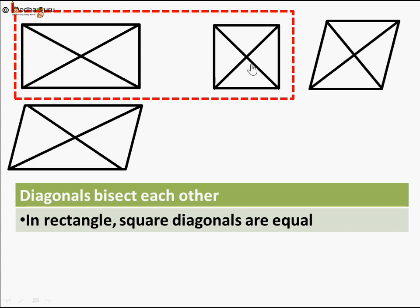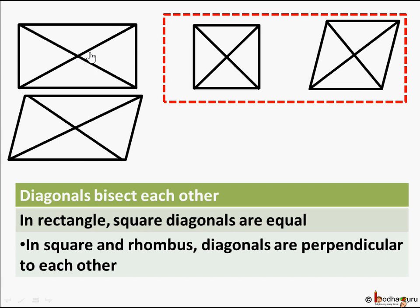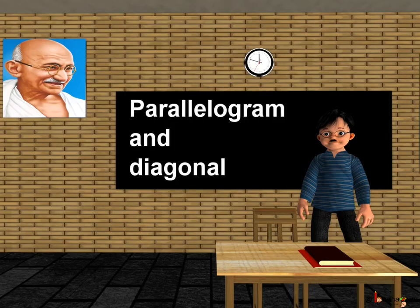In the case of square and rhombus, the diagonals are also perpendicular to each other — each angle at the intersection is 90 degrees. So remember: rectangle, square, and rhombus are all forms of parallelogram with additional properties. In square and rhombus, diagonals bisect each other, are perpendicular, but only in rectangle and square are the diagonals equal in length. The 90-degree angle at intersection applies only to square and rhombus. That's all for this lesson, children — bye bye!